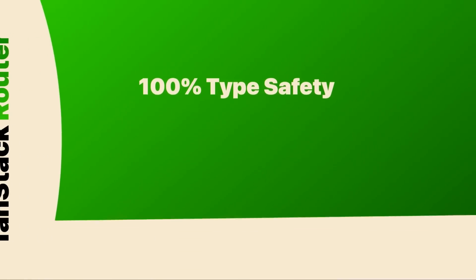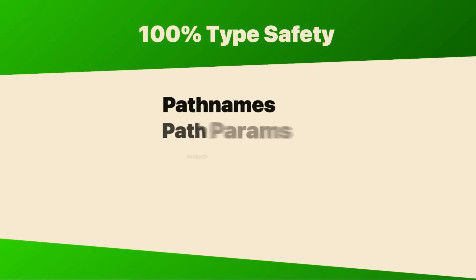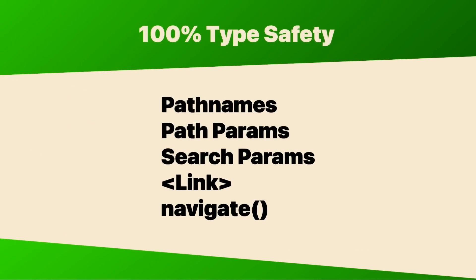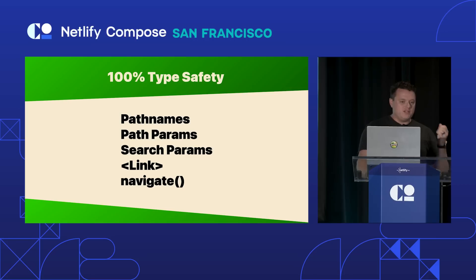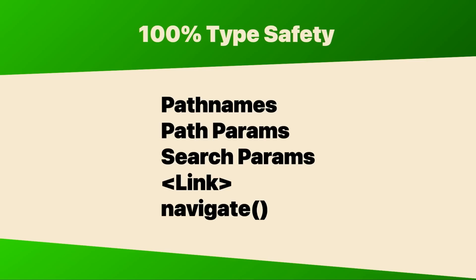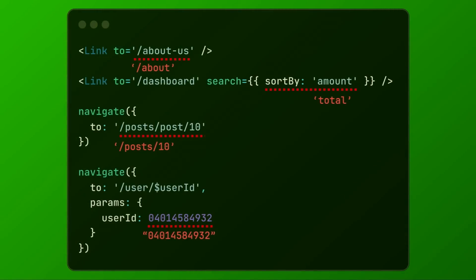When you write with TanStack Router, you don't write TypeScript — you don't even see any TypeScript — but it's fully type safe, end to end. There's no second guessing if your routing is going to break when it hits production, and there's definitely no more shooting yourself in the foot with bad links or missing search parameters.